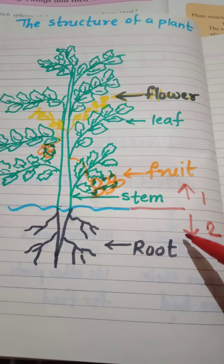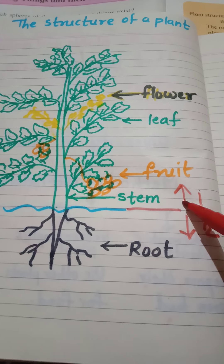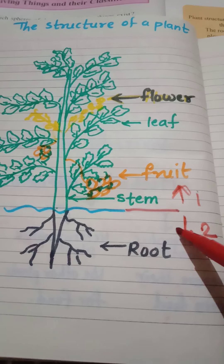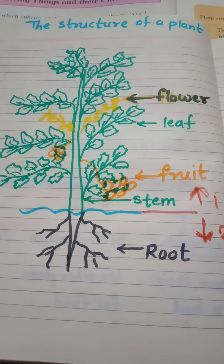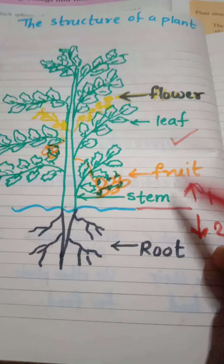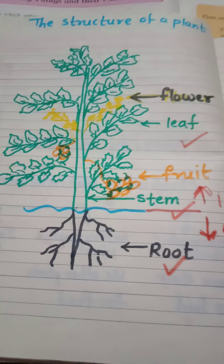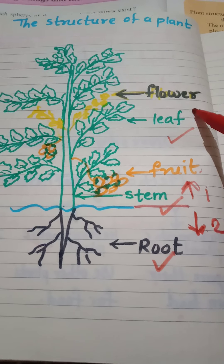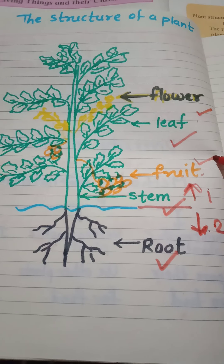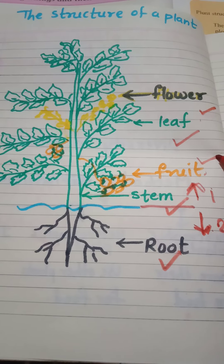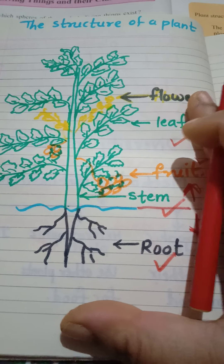The structure of a plant is divided into two parts: the part above the ground and the part below the ground. The three main parts of the plant are leaf, stem and root. As time goes on, the plant bears a flower, and that flower is then transformed into fruit.